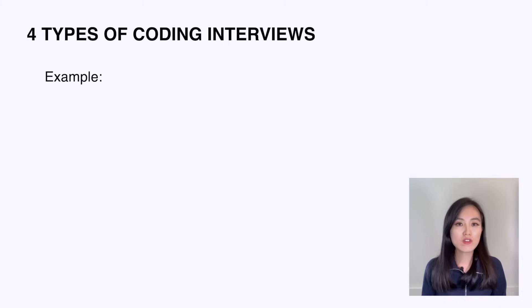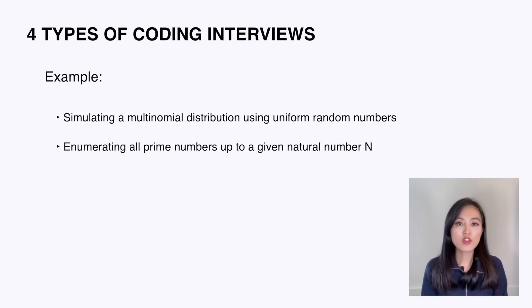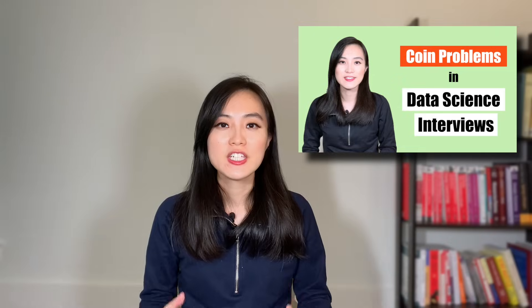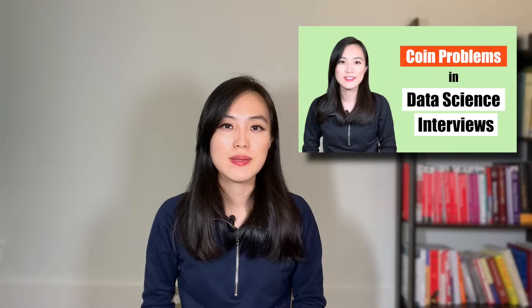Some example questions in this category include: simulating a multinomial distribution using uniform random numbers, and enumerating all prime numbers up to a given natural number n. I have covered a few sampling questions and answers in my coin problem video — check it out to get a sense of some real sampling questions.